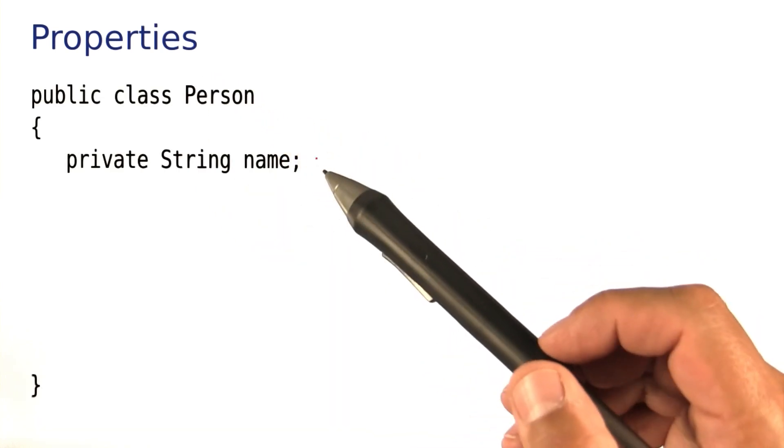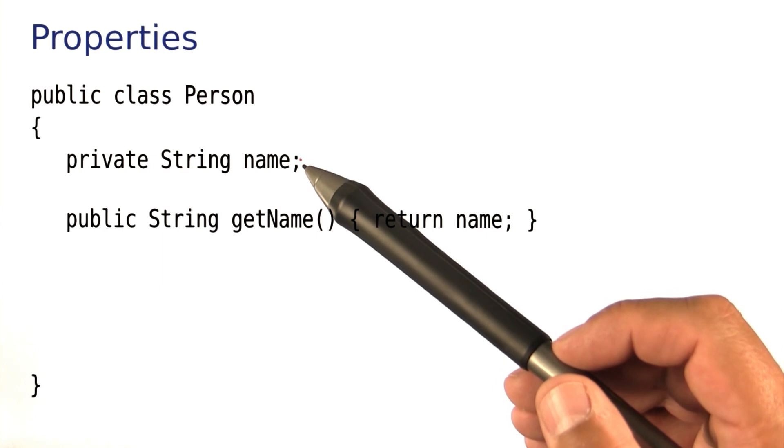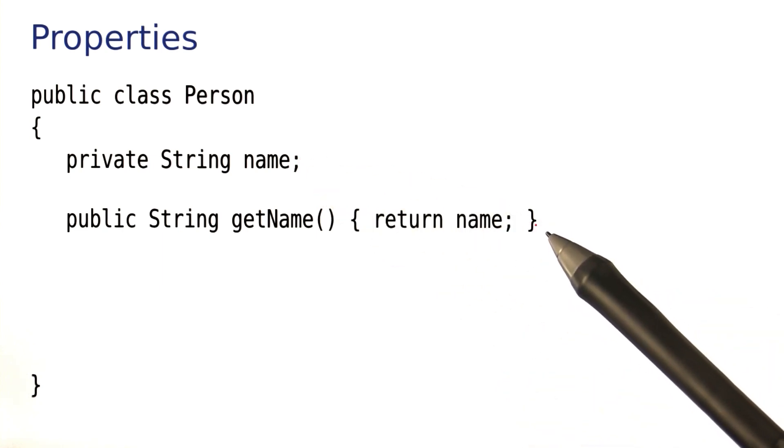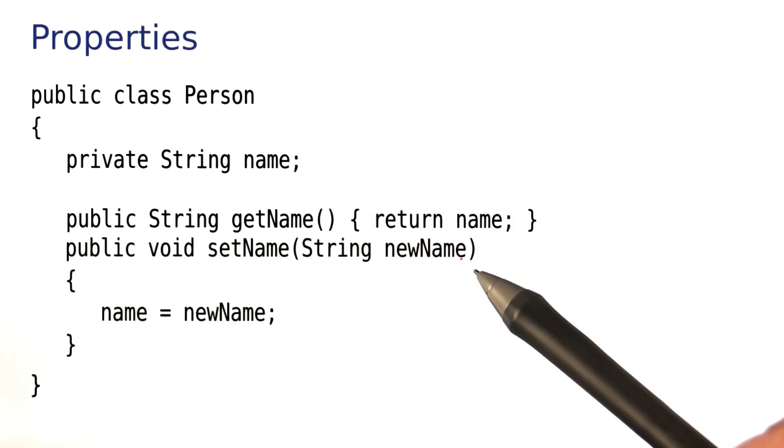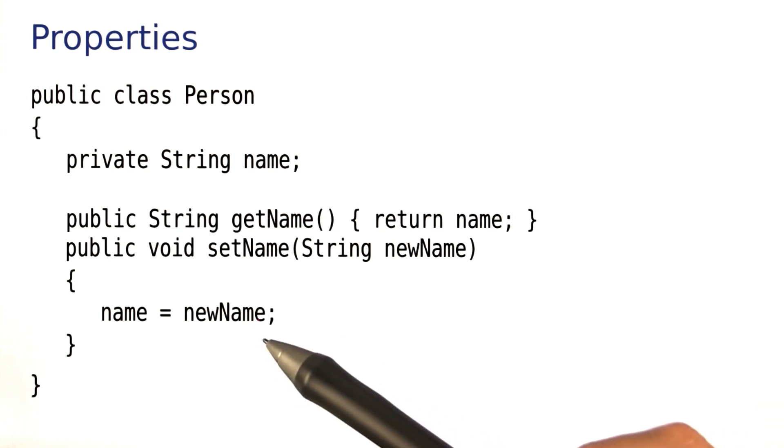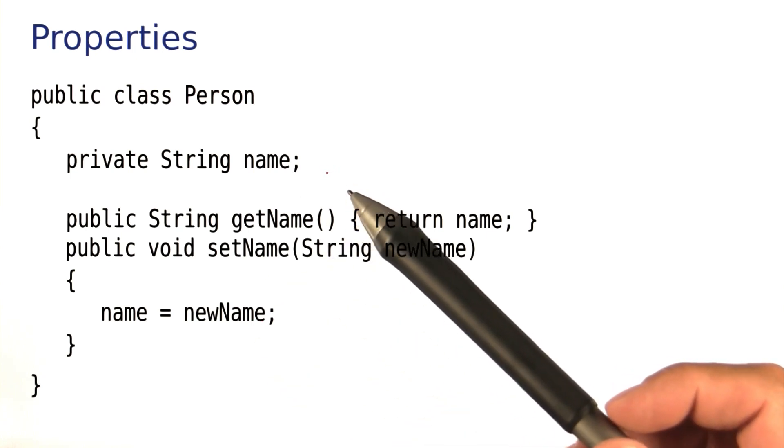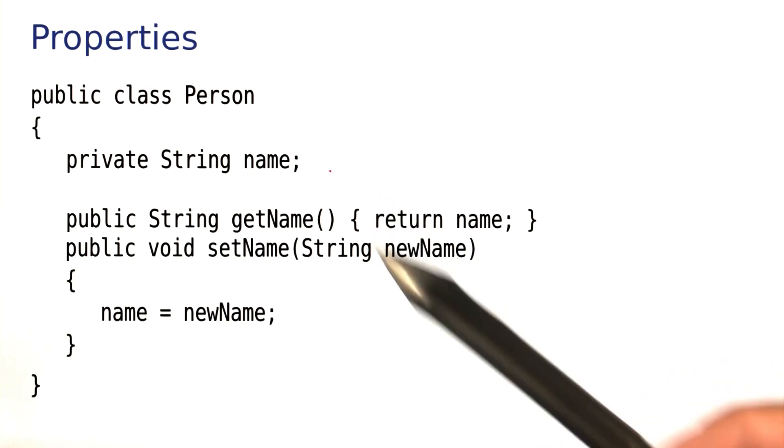Look at a person. A person has a name. That's a private instance variable, so we'll have a getter that returns the name. And here we have a setter that you can use to set the name to a new name in case the person, for whatever reason, is unhappy with the previous one.